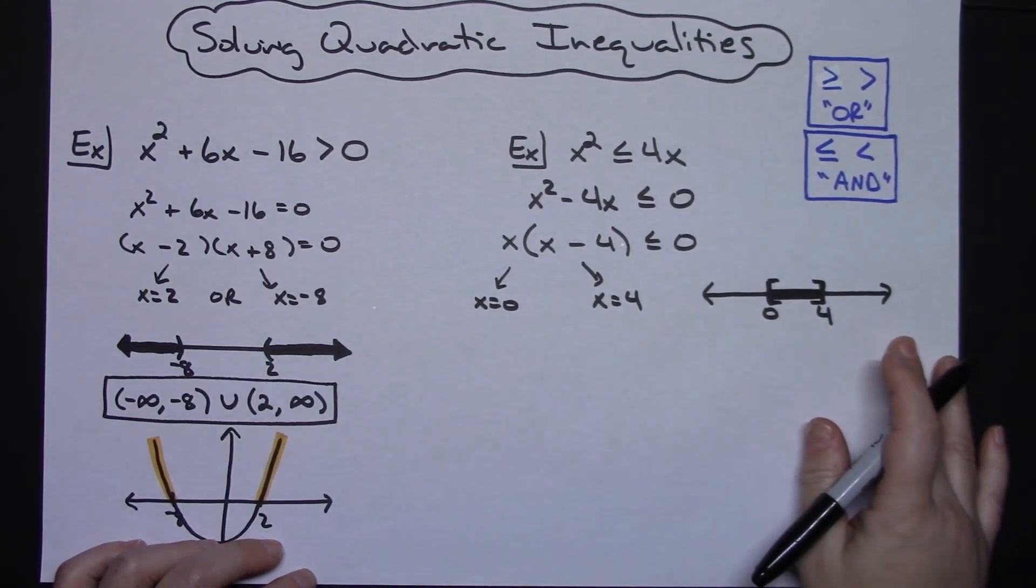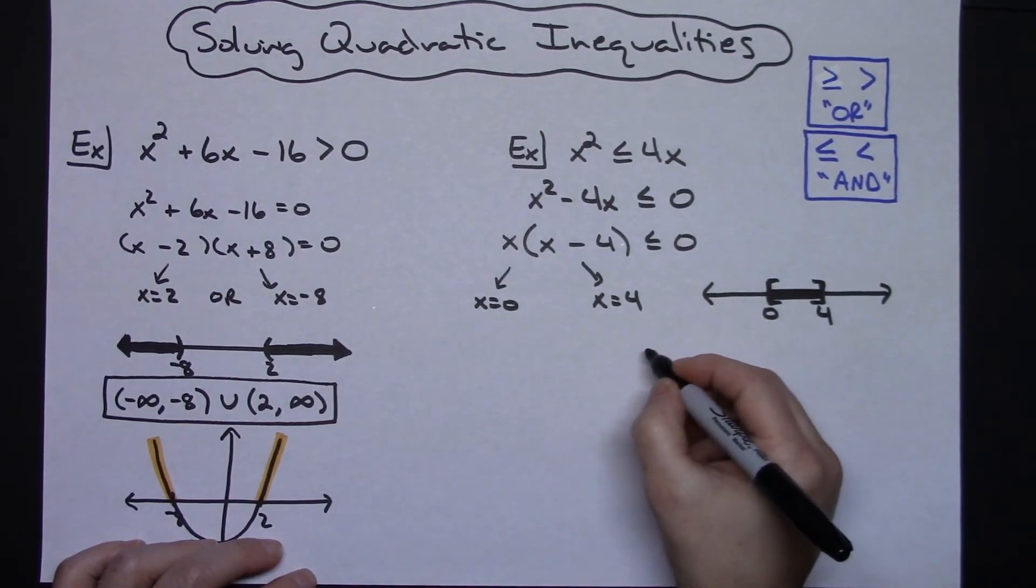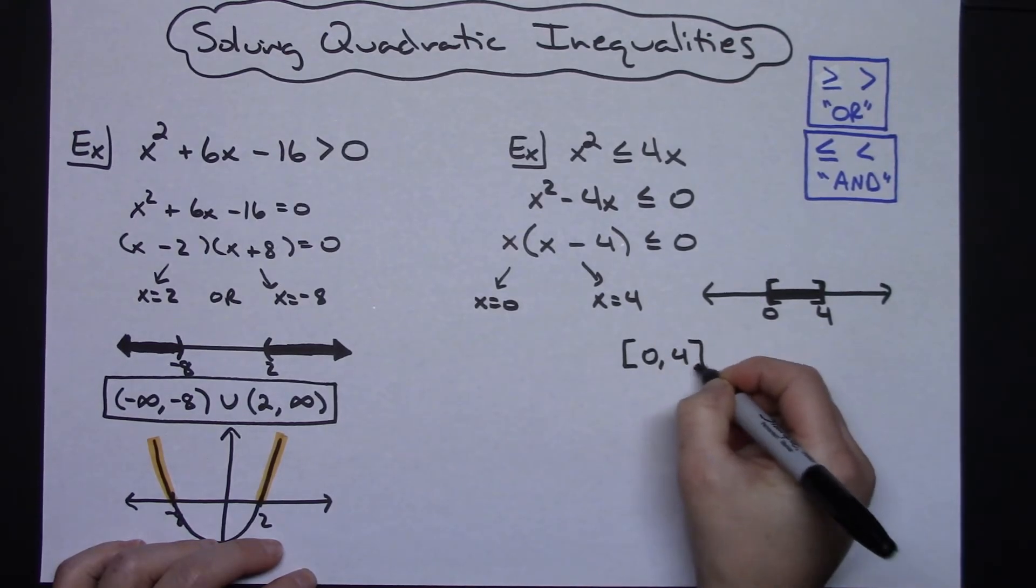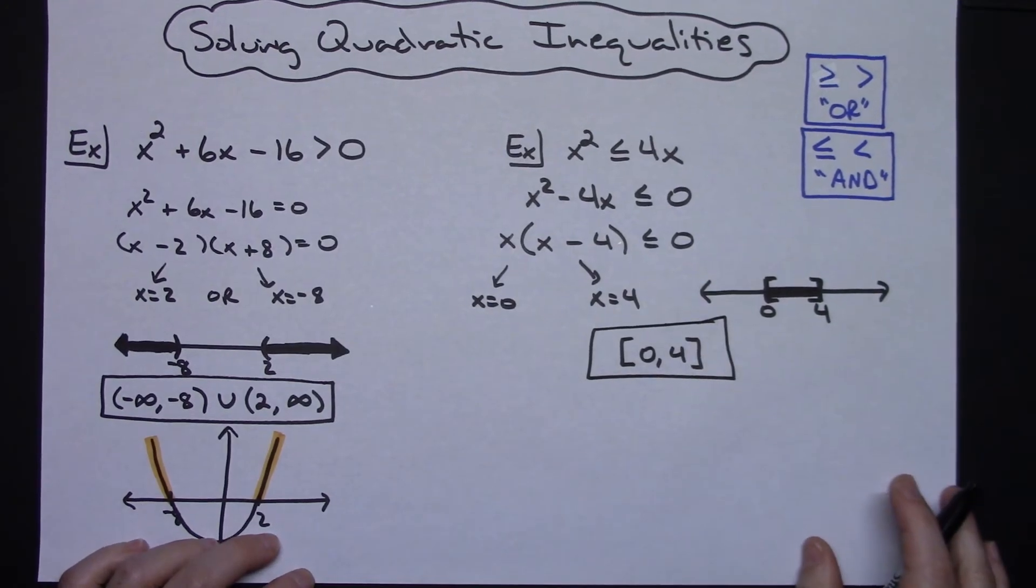I can look at this then and come up with my answer in interval notation, which would just be [0, 4], that being my answer in interval notation.